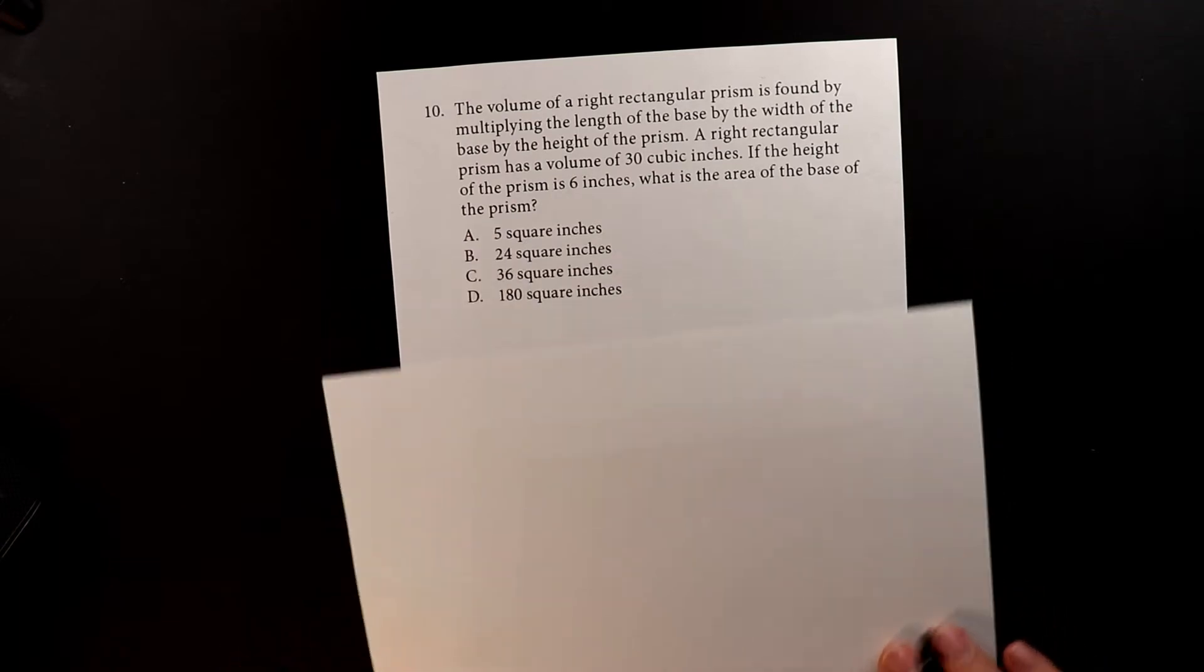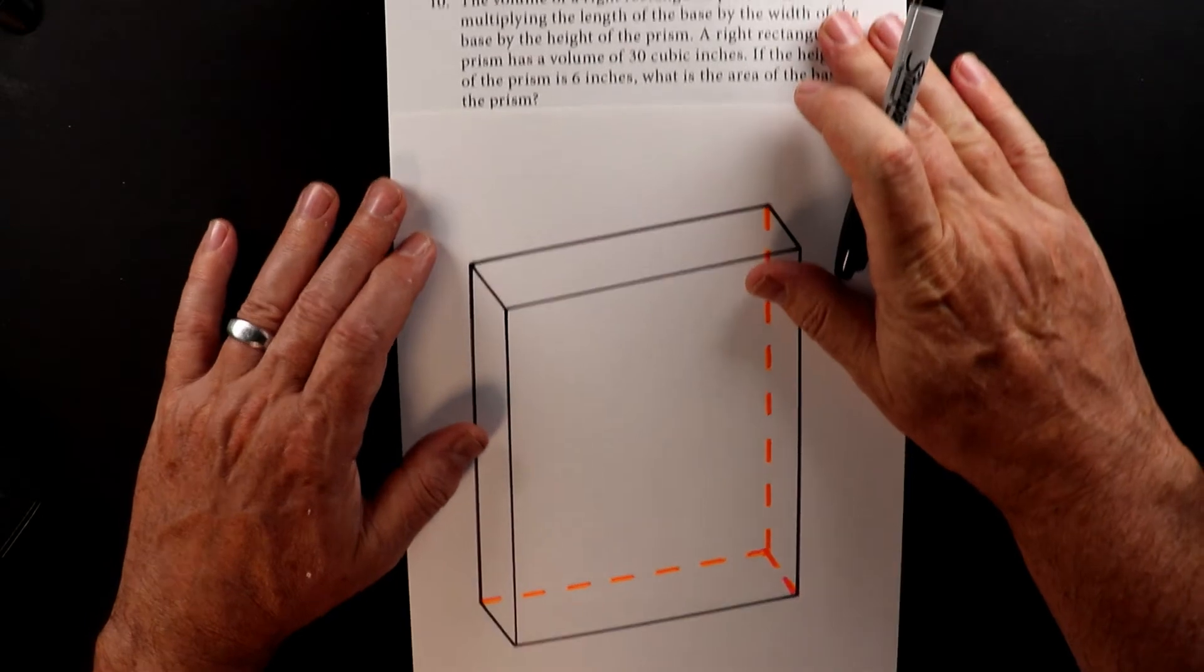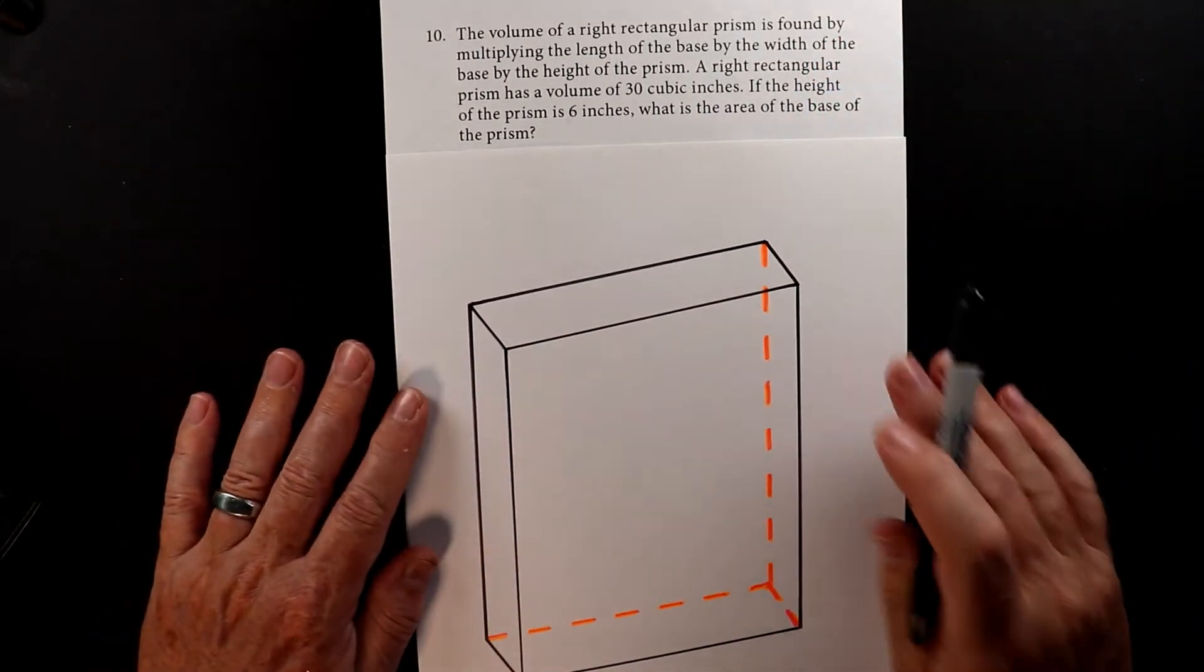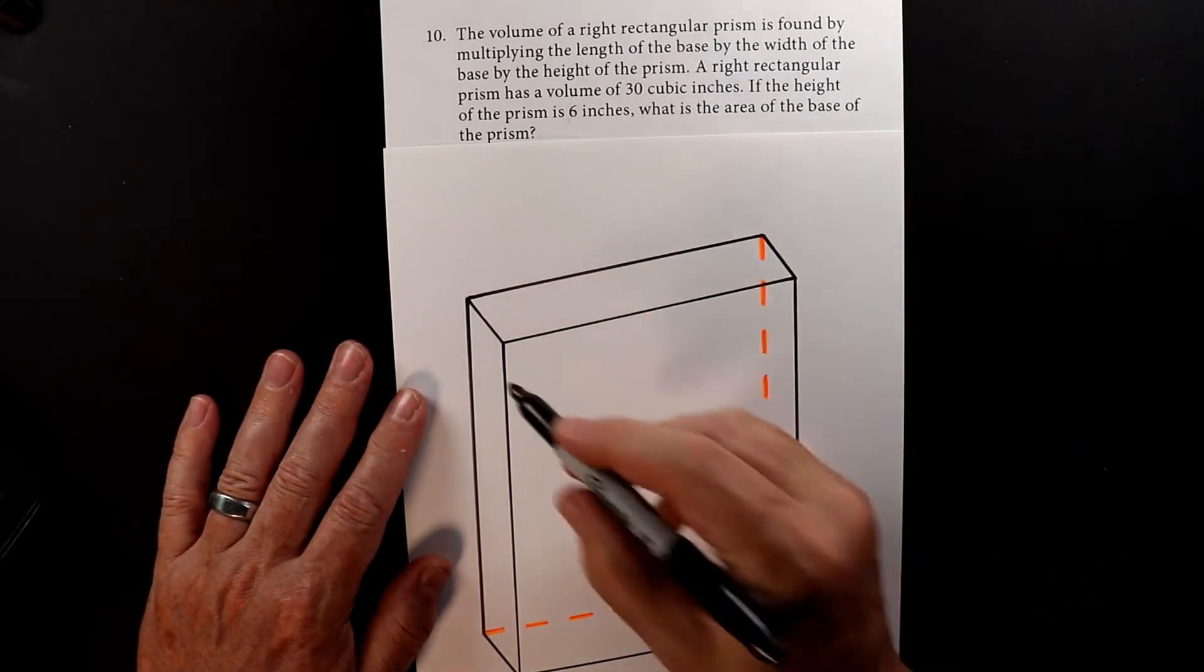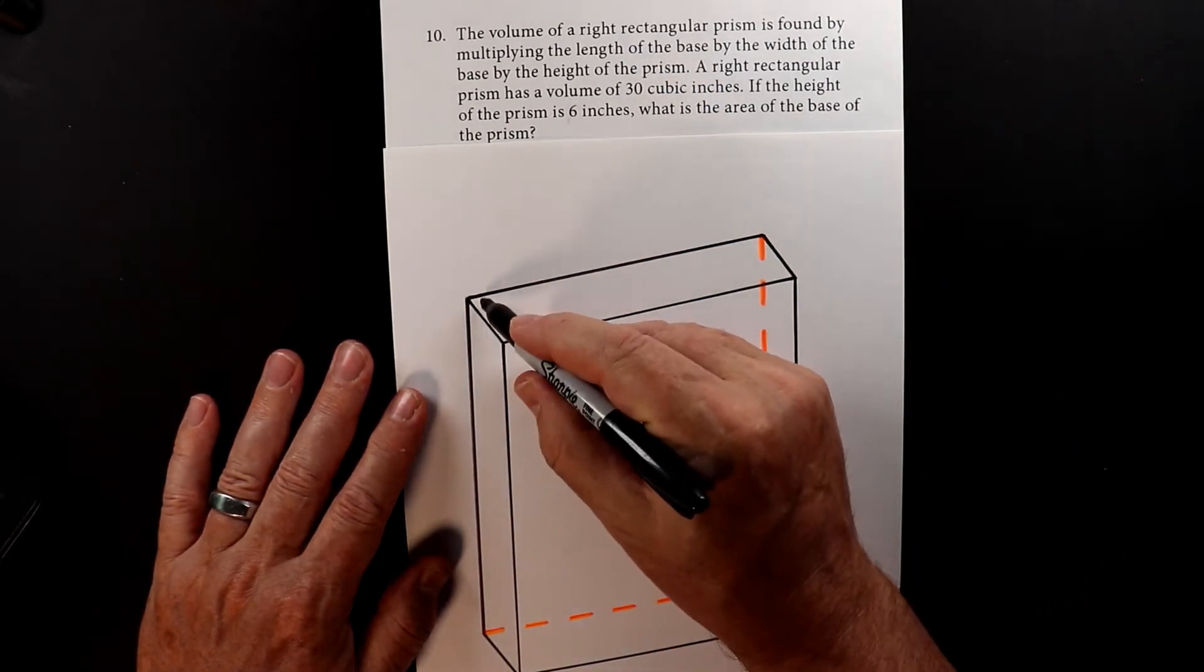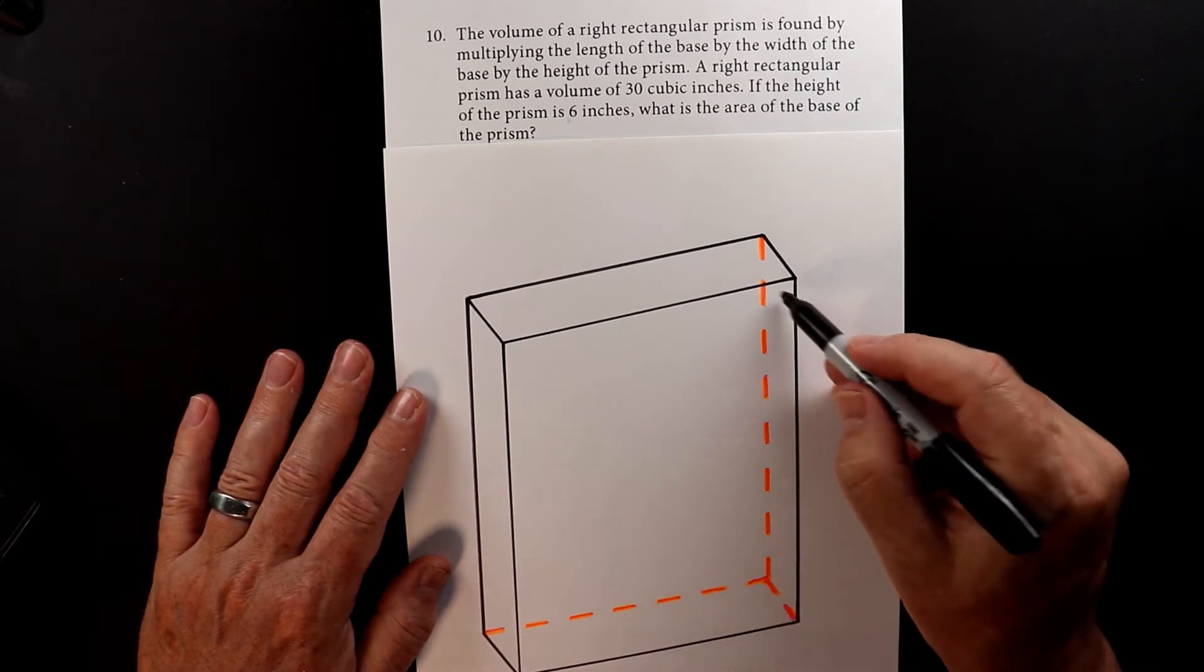So what I did is I drew this prism for you. And let's see what we have here. So a right rectangular prism means that every angle is a 90 degree. It's a perfect square.